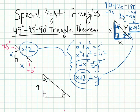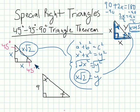In special right triangles, let's go over the theorem. The theorem says: in a 45-45-90 degree triangle, both legs are congruent — meaning they're the same length — and the length of the hypotenuse is rad 2 times the length of the leg.